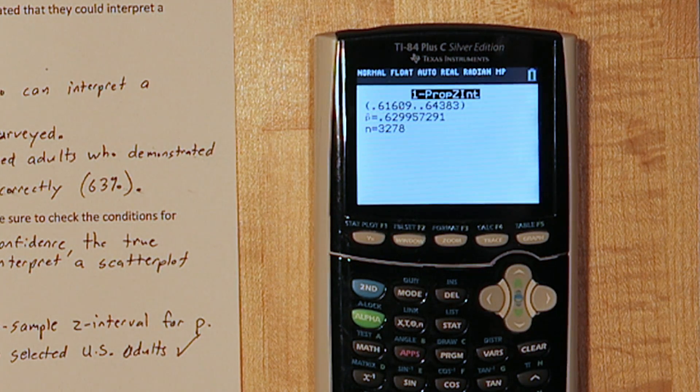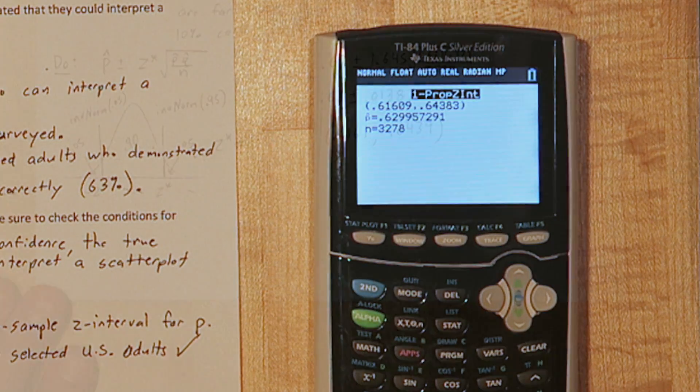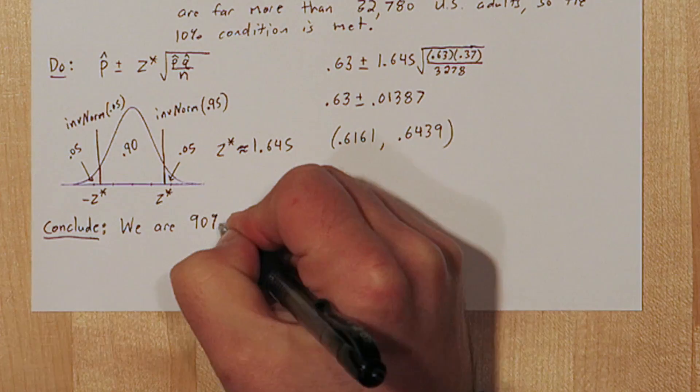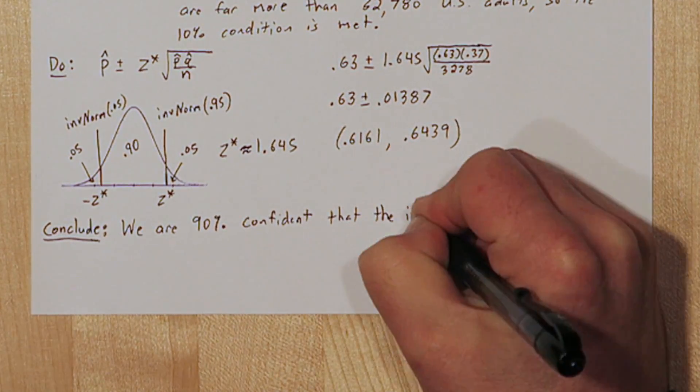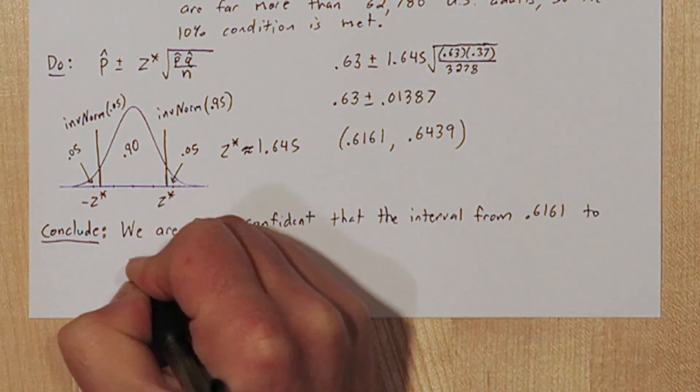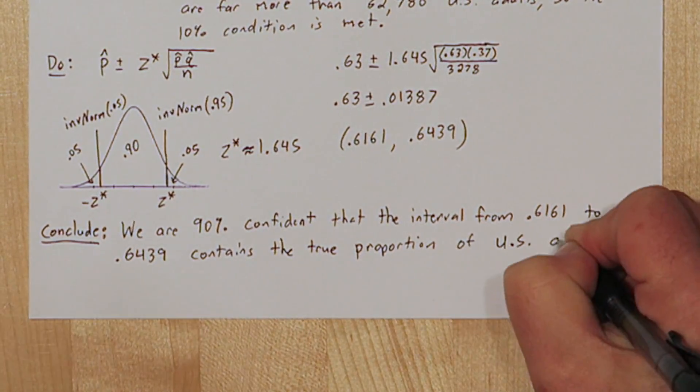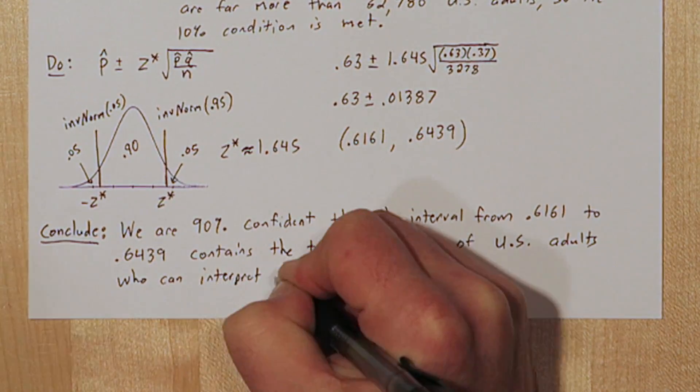Now, when we go down to calculate, we get our confidence interval. Now we're ready to conclude. We are 90% confident that the interval from .6161 to .6439 contains the true proportion of U.S. adults who can interpret a scatter plot correctly.